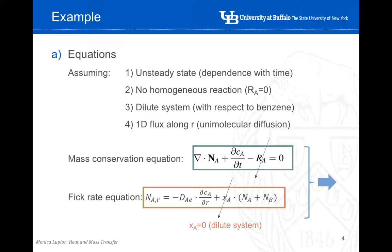As we just reviewed a few minutes ago, we have to combine two different equations in order to solve the system. One is the general equation of mass conservation, indicated here. And second is the Fick rate equation. In this case, let's see how the assumptions apply to these two equations.